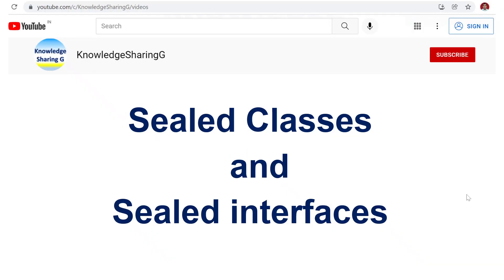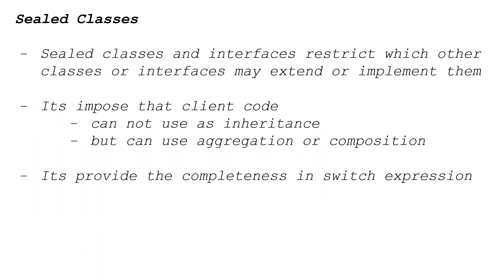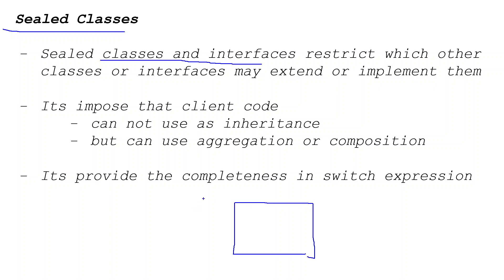Welcome. Today I am going to discuss sealed classes and sealed interfaces. First we have to discuss what are the sealed classes or interface, how we can use them, and what are some key features. A sealed class or interface is just a specialized version of any class. Before the class keyword, we write the 'sealed' keyword, which restricts which other classes or interfaces may extend or implement them.